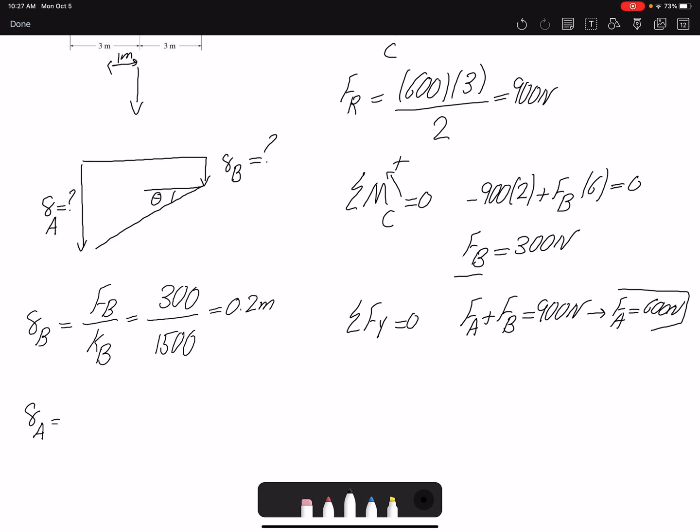Delta_a is similar: Fa over Ka. Fa is 600 Newtons and Ka is 1000 Newtons per meter, so that would be 0.6 meters.